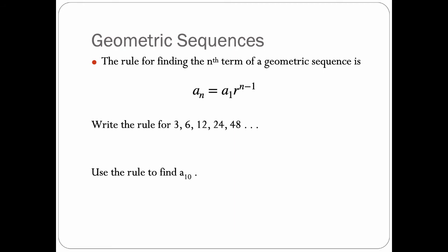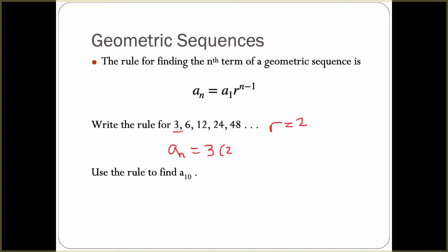The ratio r in this case is 2. We know our first term is 3. Our a_n is our first term, 3 times 2 raised to the (n - 1) power.